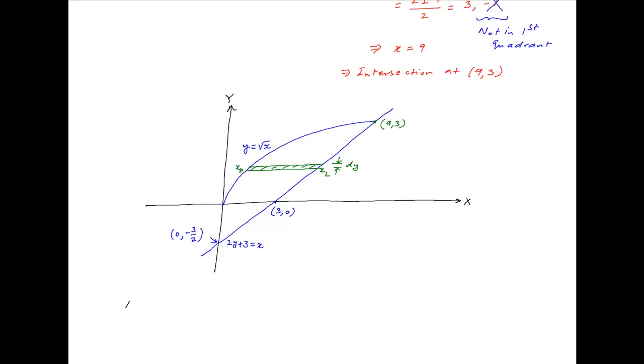Therefore, the required area is equal to integral, y going from 0 to 3, xp minus xl dy, and since the area is a positive quantity, we take the modulus. The value of x on the parabola is equal to y square, and the value of x on the line is equal to 2y plus 3.